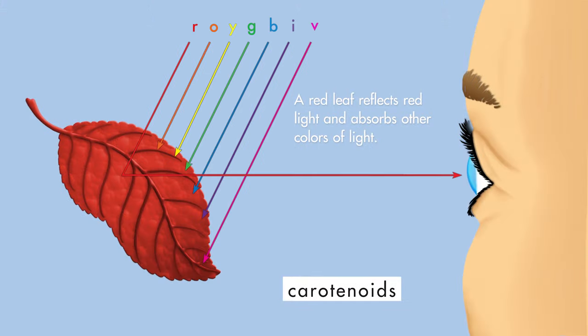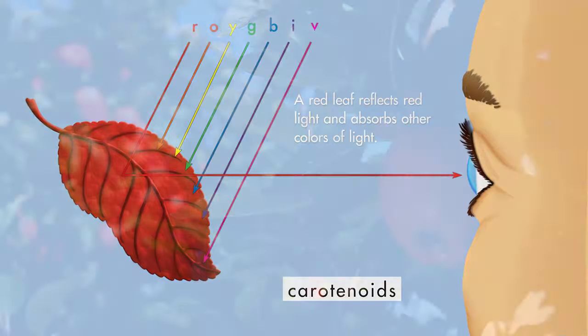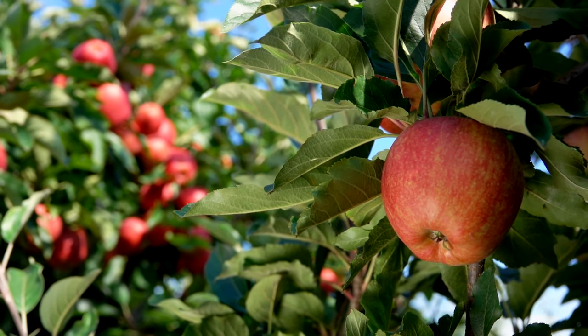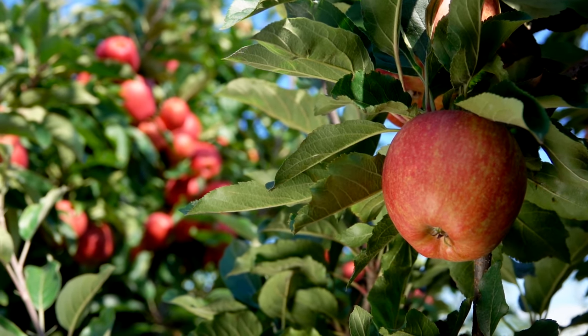Carotenoids reflect red, orange, or yellow light, but absorb other colors, including green. Carotenoids are the pigments that make carrots orange and apples red.